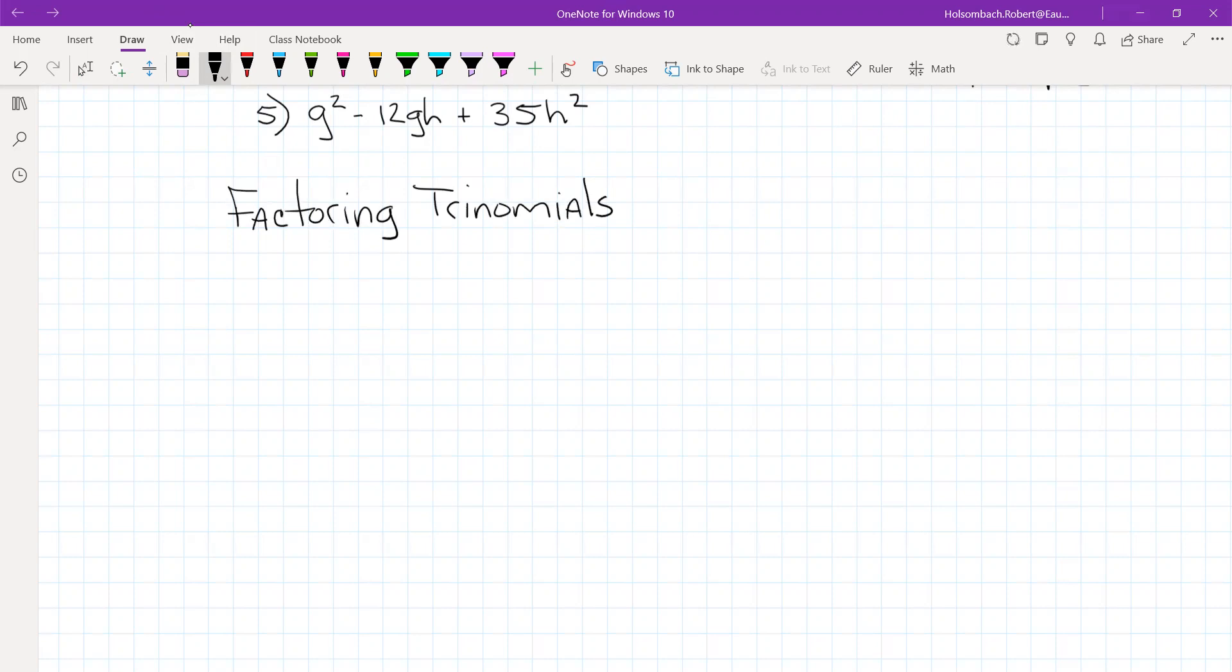But with multiple variables, so we're going to say factoring trinomials like ax squared plus bxy plus cy squared.